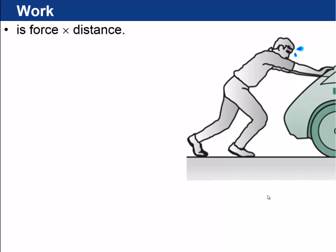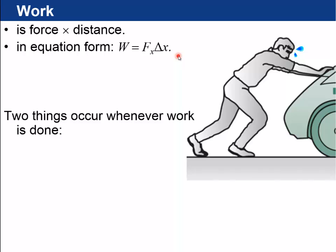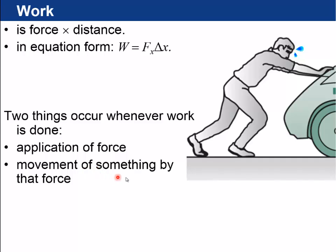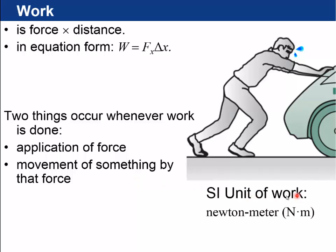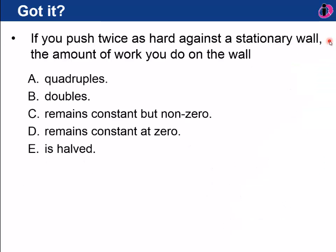Let's start with the simplest, most basic form of energy: work. Work in its simplest form is force times distance. We write W = F_x times Δx. Two things occur every time work is done: an application of a force, and the movement of something by that force. The SI unit of work is force in newtons times distance in meters — the newton meter — given the special name the joule, named after James Joule. This guy might be doing work on a car by pushing it along.